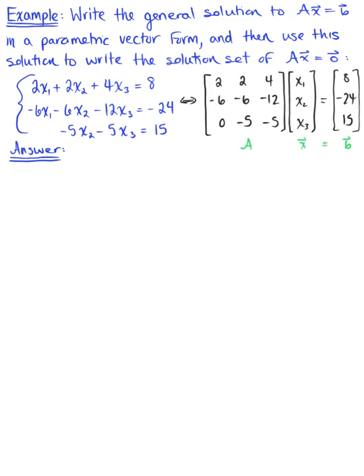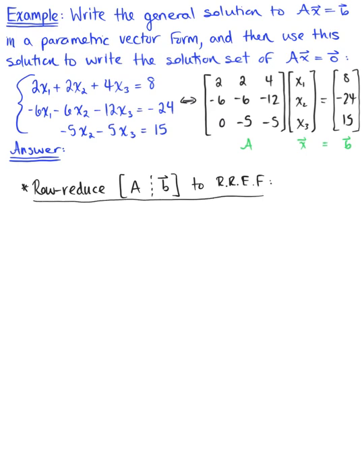Now we want to find the general solution vector to the system. Solving for the general solution vector uses the same strategy we saw with homogeneous equations. To get started, we are going to row reduce the augmented matrix — that is matrix A augmented with vector b — to row-reduced echelon form. We will pause when we hit echelon form to make some observations.